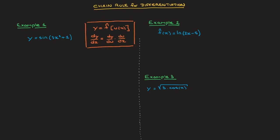Going back to this first example, we can see that y is equal to sine of 3x squared plus 1. If we let this inner function 3x squared plus 1 be u of x — in other words, if we define a new variable u as being equal to 3x squared plus 1 — then we can rewrite our function in terms of this new variable u. That would be y equals sine of u.